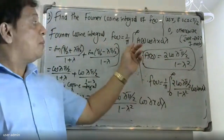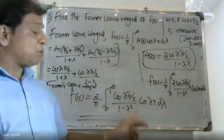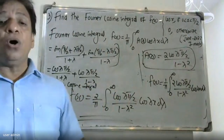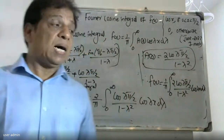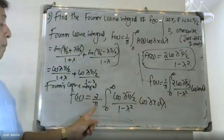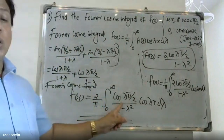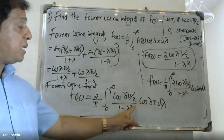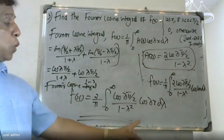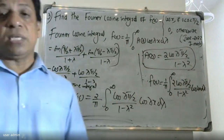Now we have the Fourier cosine integral in final form. We can substitute to get: f(x) = (2/π) ∫₀^∞ [2cos(λπ/2) / (1-λ²)] cos(λx) dλ. This is the final Fourier cosine integral result.